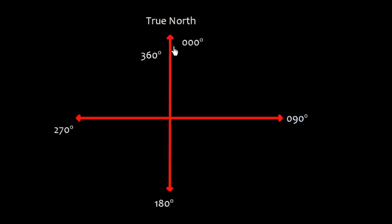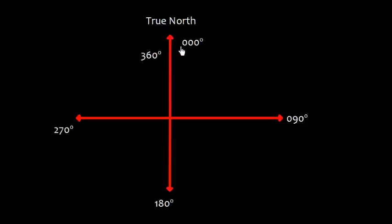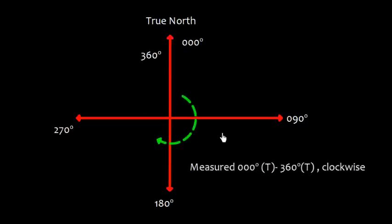So this is 000 degrees — that is true north. This is 090 degrees, this is 180 degrees, this is 270 degrees, and this is 360 degrees, which is again 000 degrees. So we can say that bearings are measured from 000 to 360 degrees.